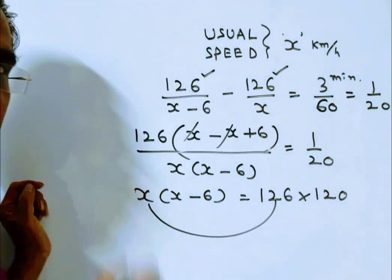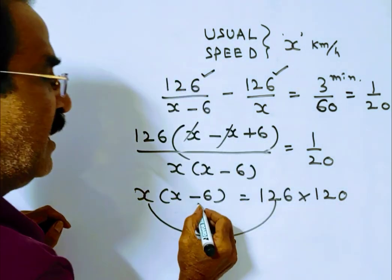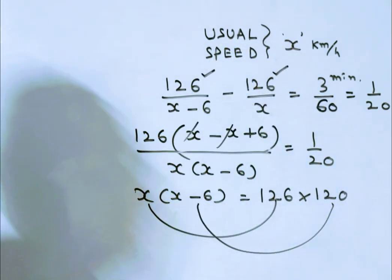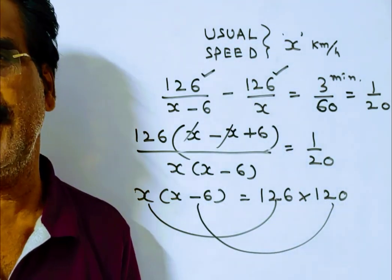So normal speed 126 and reduced speed 120. Your answer is 126. Thank you.